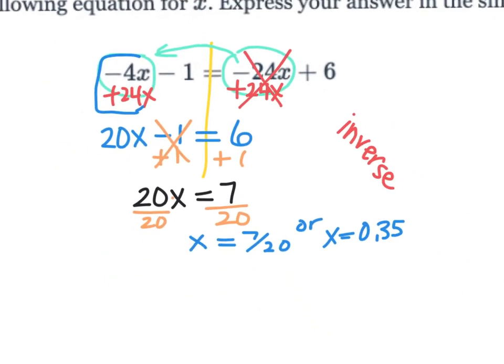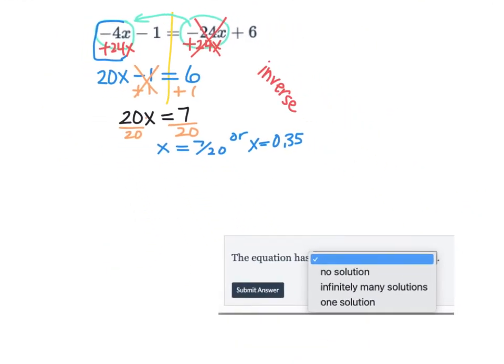So now we have to decide, is this no solution? Is this infinitely many solutions? Or is this one solution? Did we get an actual answer or a value for x? So when we get an x equals a value, that's called one solution. So you would circle that.